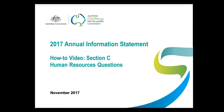Hi and welcome. This video is designed to help you fill in Section C of your 2017 Annual Information Statement. Section C, Human Resources, is about the people who work or volunteer for your charity and it consists of one question broken up into two parts. Your annual report, organisational chart or pay-as-you-go payment summary might help you answer these questions, so we recommend having it at hand for easy reference.